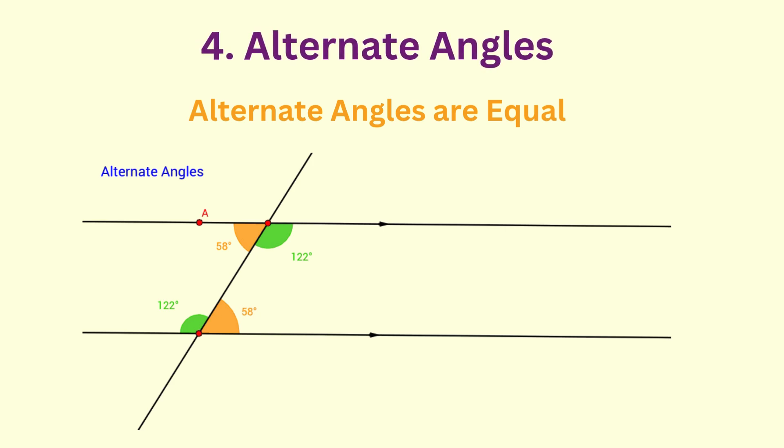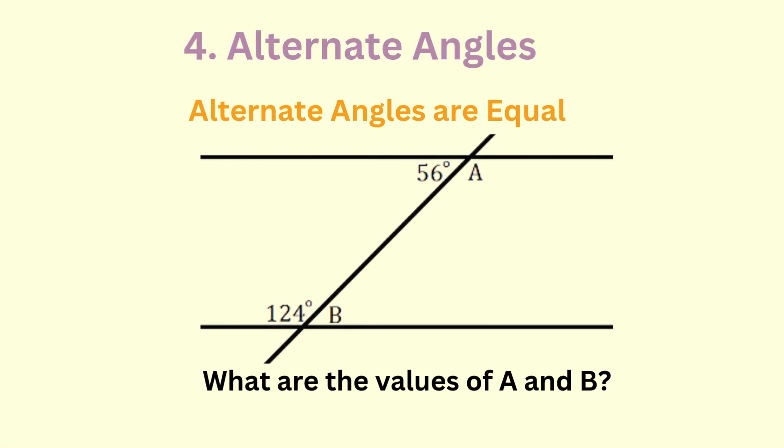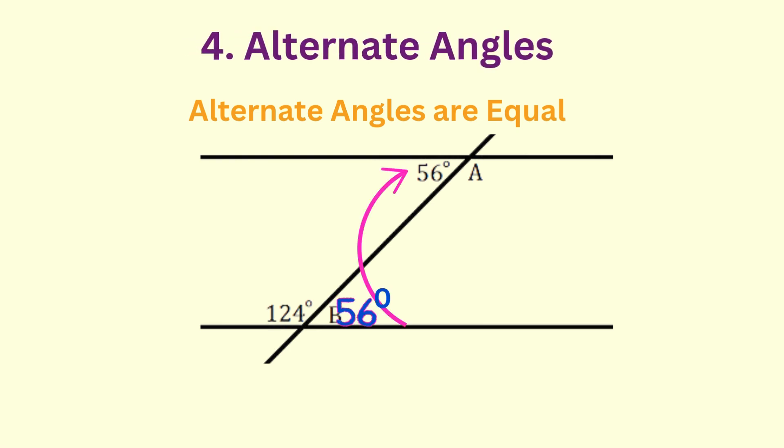If a transversal intersects two parallel lines, the alternate interior angles are equal. This theorem plays a crucial role in proving parallelism and solving angle puzzles.